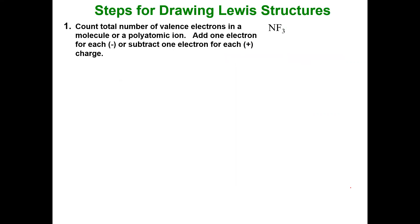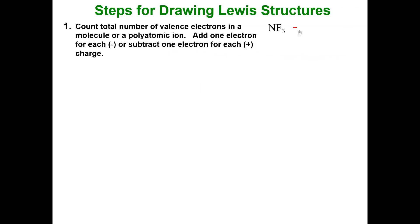The first rule is you have to count the total number of valence electrons in the molecule or polyatomic ion. If there's a negative charge, like an oxyanion, you add an electron for every negative charge. If there's a cation with a positive charge, like ammonium, you subtract an electron for every positive charge. With nitrogen trifluoride we don't have charges, so we just count: nitrogen has five valence electrons (group 5A) and each fluorine has seven (group 7A), for a total of 26 valence electrons.